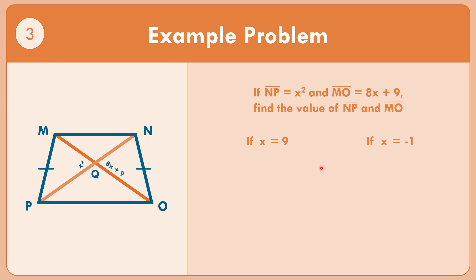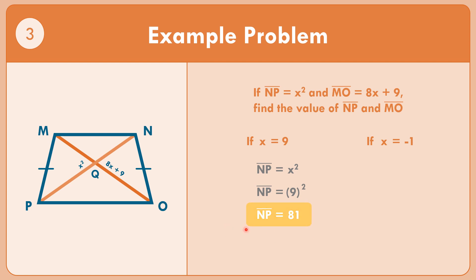If x equals 9, we replace in line segment NP equals x squared: NP equals 9 squared equals 81. So line segment NP equals 81. Since diagonals are congruent, line segment MO also equals 81.